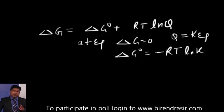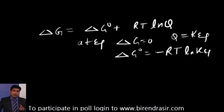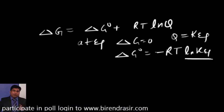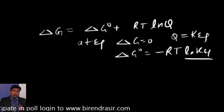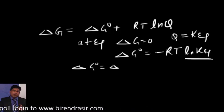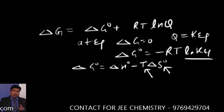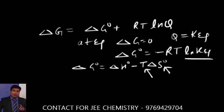We can write this as ln K equilibrium. Now, we have to find this ln K equilibrium, and for that we need delta G0. Delta G0 we can write as delta H0 minus T delta S0. We are given this temperature, but we are not given delta H0; instead we are given delta U0.